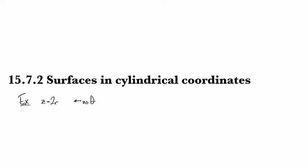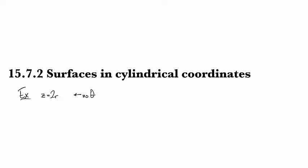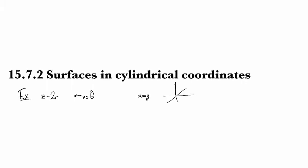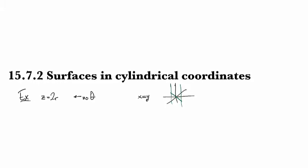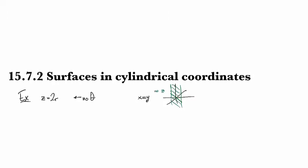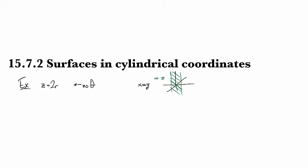This is independent of the angle of rotation. Just like a Cartesian equation that does not have a z in it — say x equals y — you know that's going to be some plane. It looks like the line x equals y and just extends vertically because there's no restriction on z. For z equals 2r, we have the same idea: there's no restriction on theta.